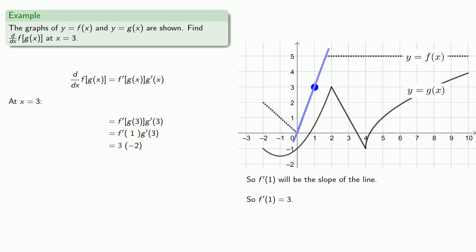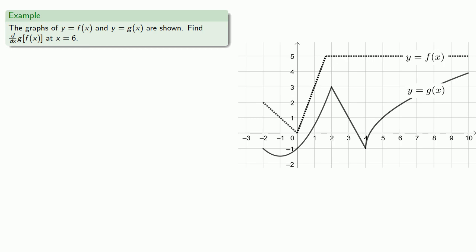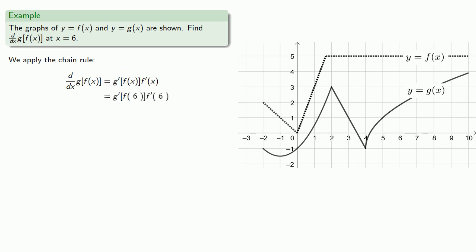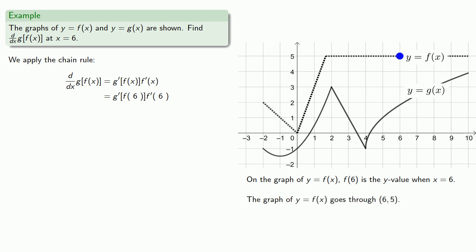And so the derivative is negative 6. Now let's try something else — let's find the derivative of g of f of x at x equals 6. We'll apply the chain rule and let x equal 6. So we need to find f of 6. On the graph of y equals f of x, f of 6 is the y value when x equals 6, and we see the graph goes through (6, 5), so f of 6 equals 5.